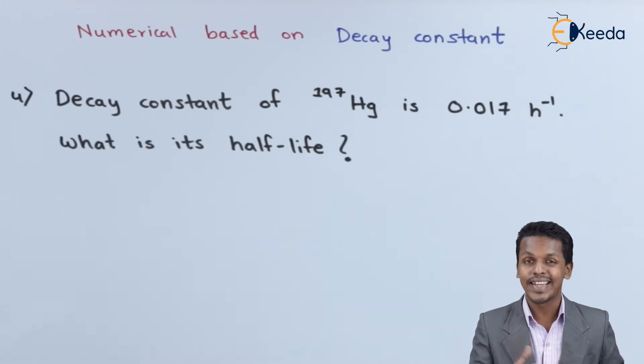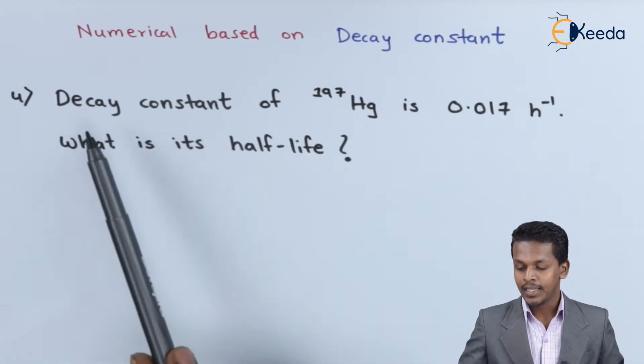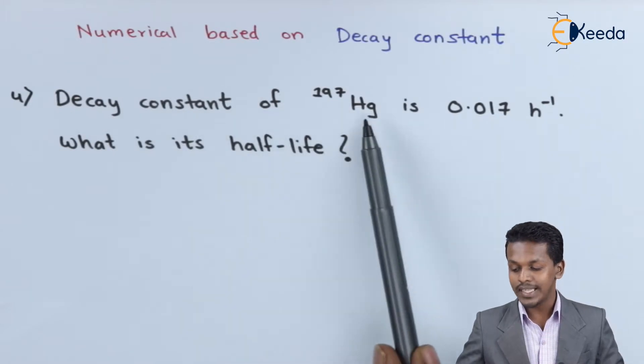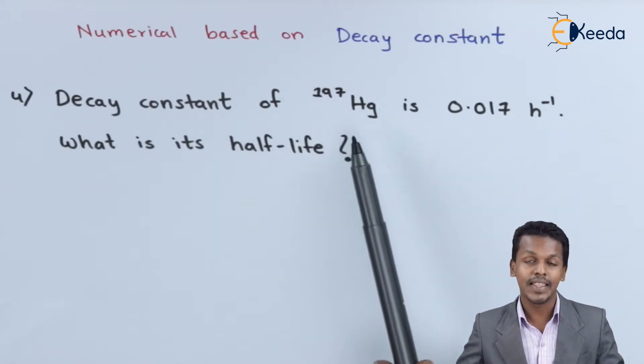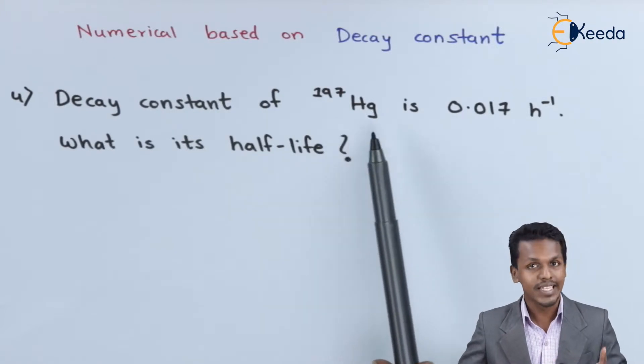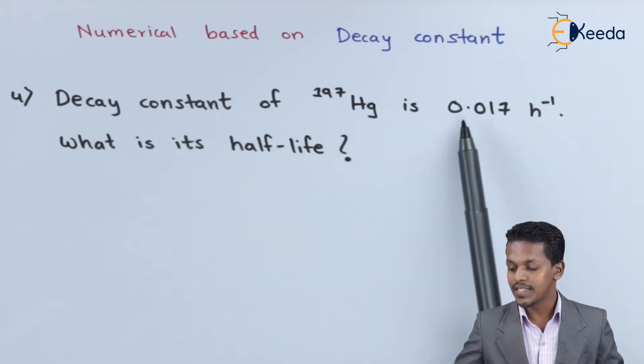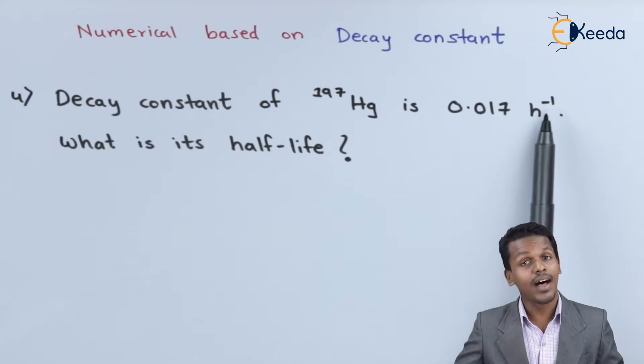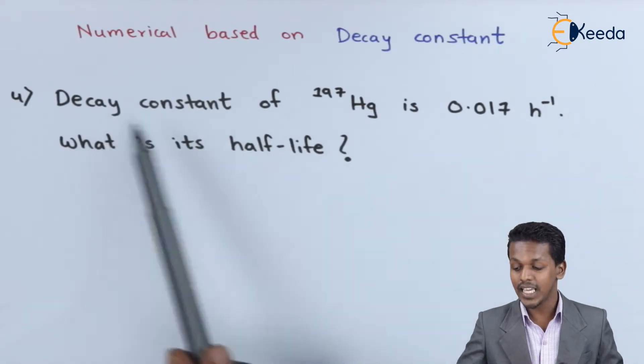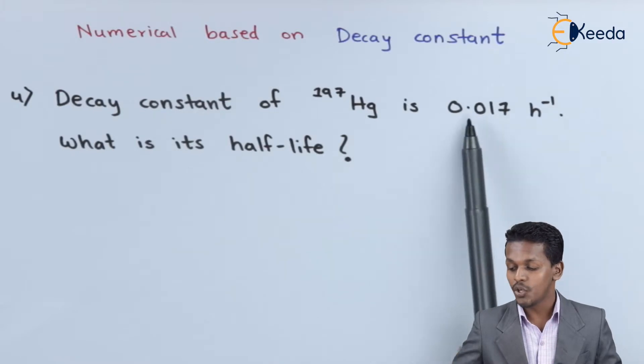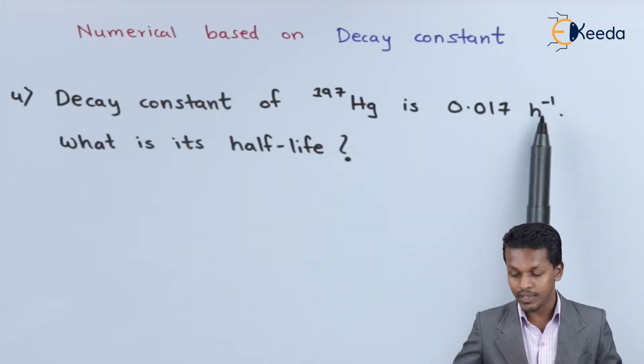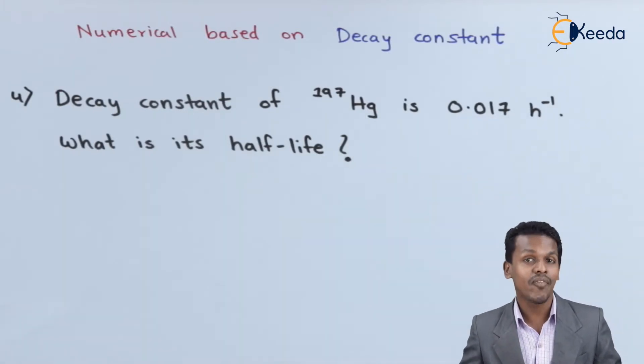Let's see what the question is. The decay constant for Mercury-197—here 197 represents the atomic mass number—is found to be 0.017 h^-1. That is, the decay constant for this mercury is 0.017 h inverse. So what is its half-life?